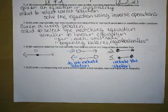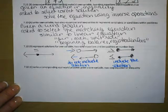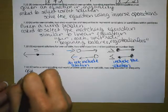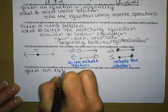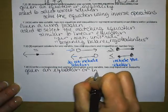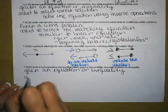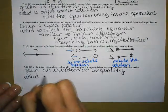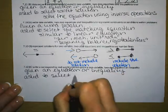7.10c says to write a corresponding real-world problem given a one-variable two-step equation or inequality. Oftentimes you will be given an equation or inequality and you will be asked to select the word problem that matches.